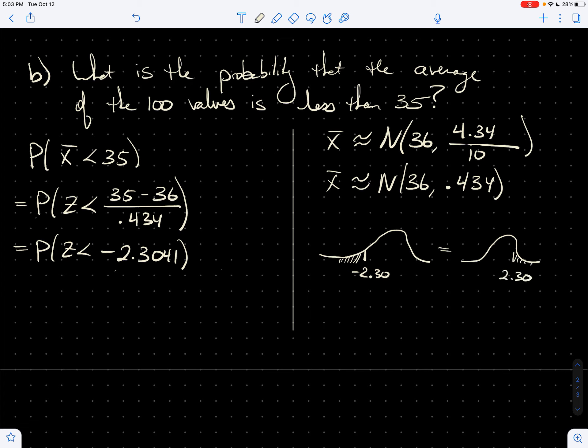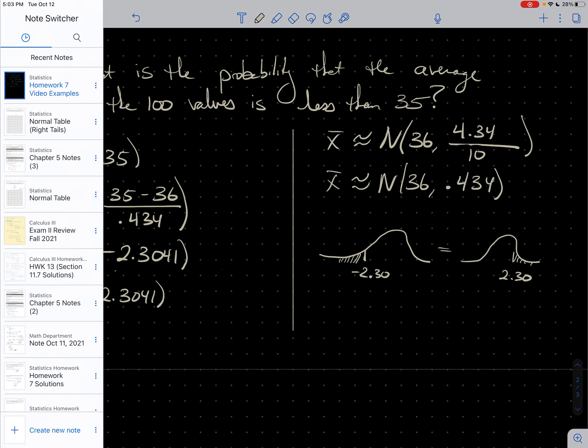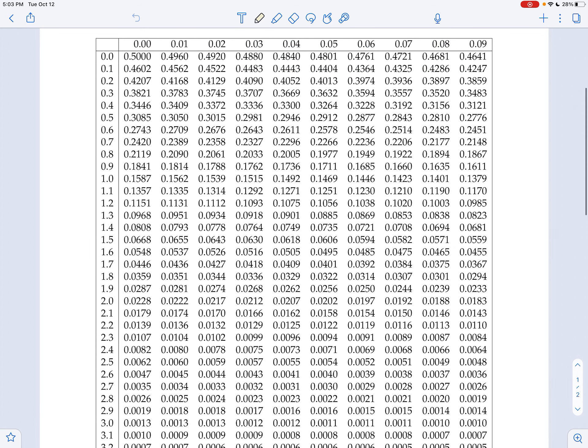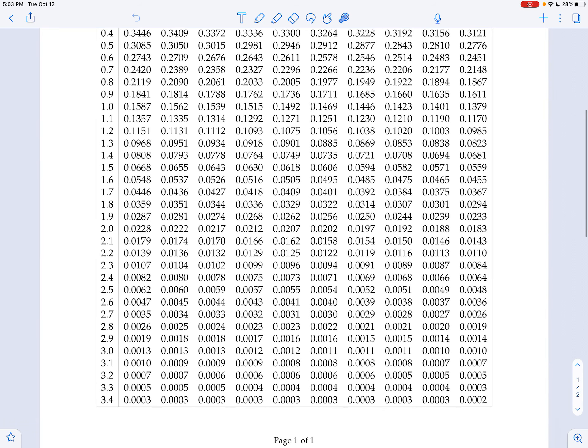So I can use, I'll flip it with our probability notation. This is Z greater than 2.3041. And now I can use my right tail table. And I'll just use 2.3. So 2.30 right here, 0.0107.